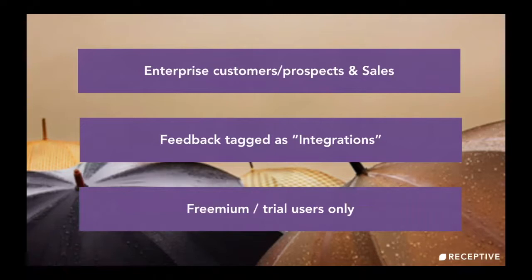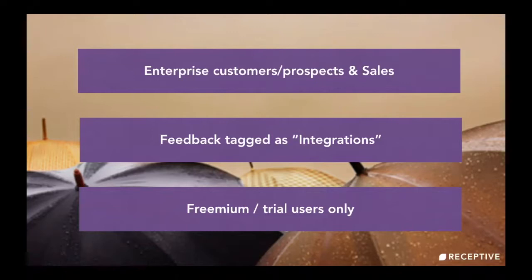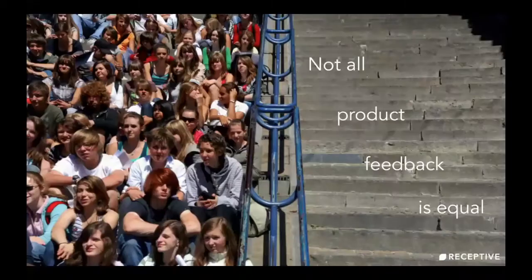It's important to note that in one road mapping meeting you might look at three goals and three different reports. It's not that for the whole year you only look at enterprise requests — you might be balancing several different initiatives, and you're also going to balance that against what your teams want. This is very flexible and it's going to change over time, as long as you tie it into that strategy. The takeaway is that not all product feedback is equal, and the data you look at is going to change over time as your initiatives and goals change.